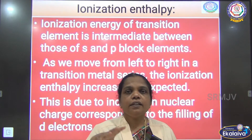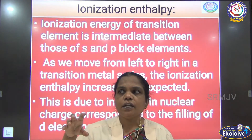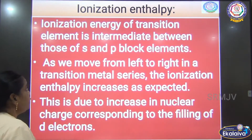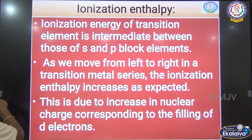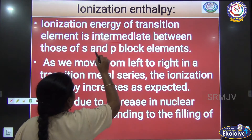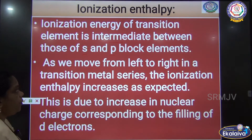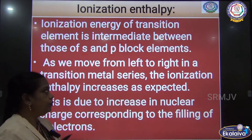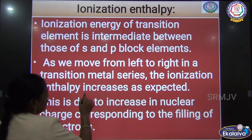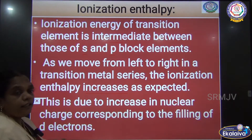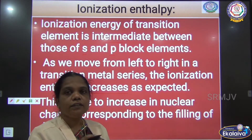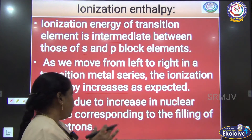In the D orbital, the transition elements show the same trend in ionization energy. Transition elements are intermediate between the S and P block elements. As we move from left to right across the transition series, the ionization energy, or ionization enthalpy, is increasing as expected — ionization energy increases from left to right.